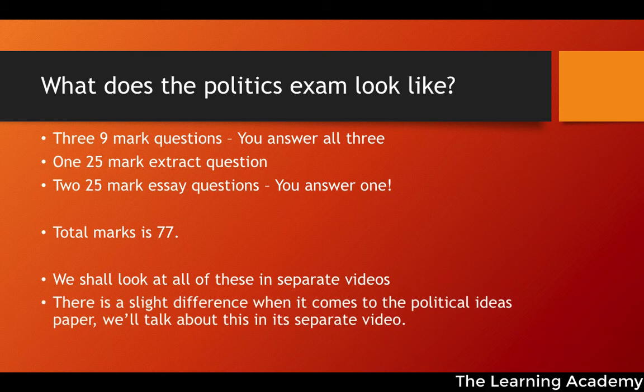I should note there's a slight difference when it comes to the structure of the exam when we look at the political ideas paper. Whereas in the normal comparative and UK politics papers you have two 25-mark essay questions and you get to answer one of them, with the political ideas paper you have a select list of all the different ideologies — feminism, anarchism, ecologism, nationalism, and so on — and you pick the one that you studied and are most familiar with.